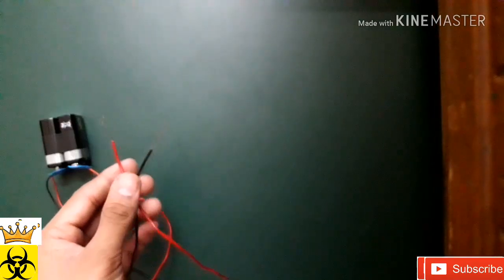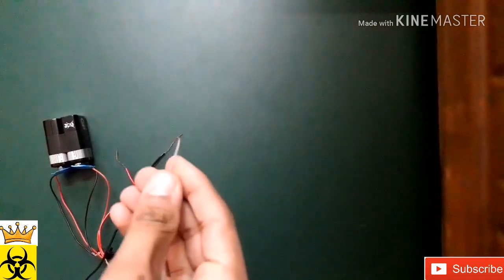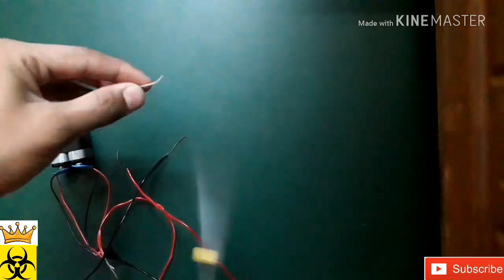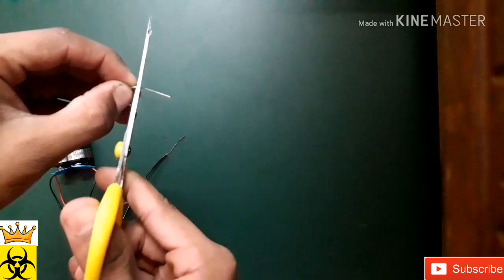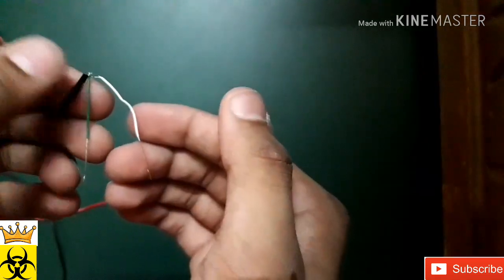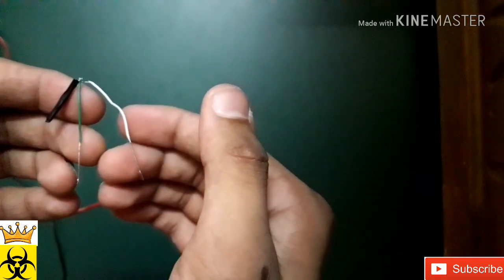Now you will get two wires separately. Cut the first wire we cut from the USB cable into two halves, then join the two halves of the wire together.